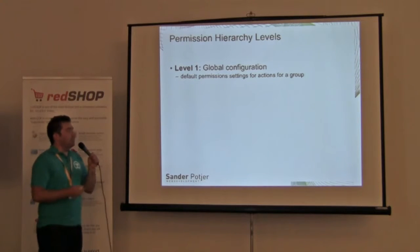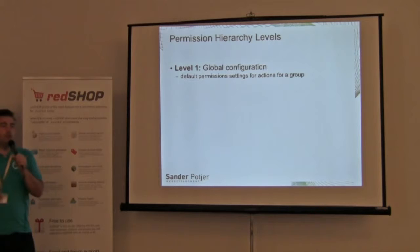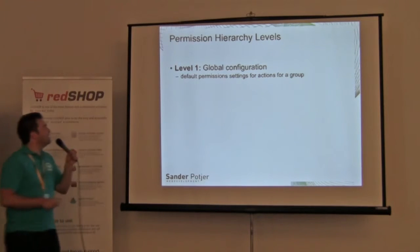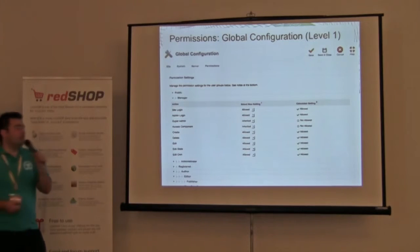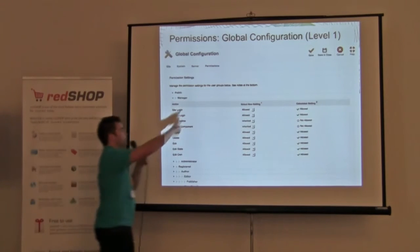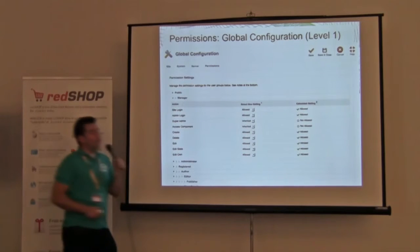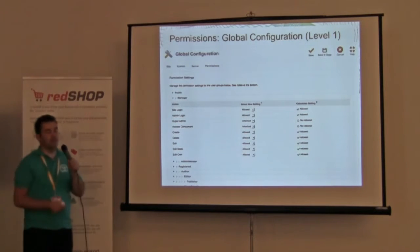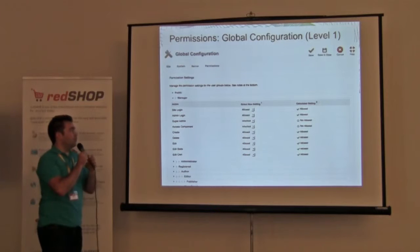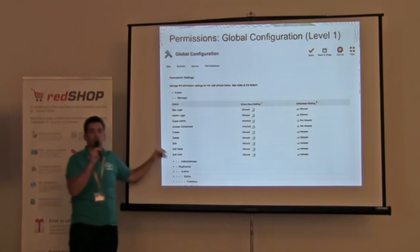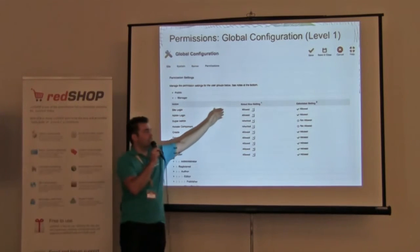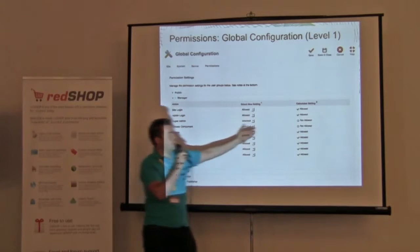There are four levels. Level one is the global configuration — in 1.6, there's a new 'Permissions' tab. You see an overview of all groups, and when you click on a group, you see the actions for that group. Note that after changing a setting, you must save first before the calculated result appears on the right side — it doesn't update in real time.